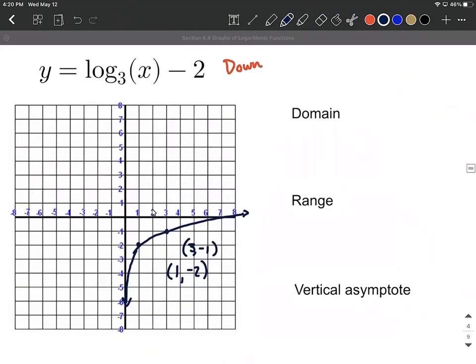Now the domain hasn't changed on this. As you can see from our graph, it's only positive values, only values to the right of our vertical asymptote. So that's going to be from 0 to infinity.